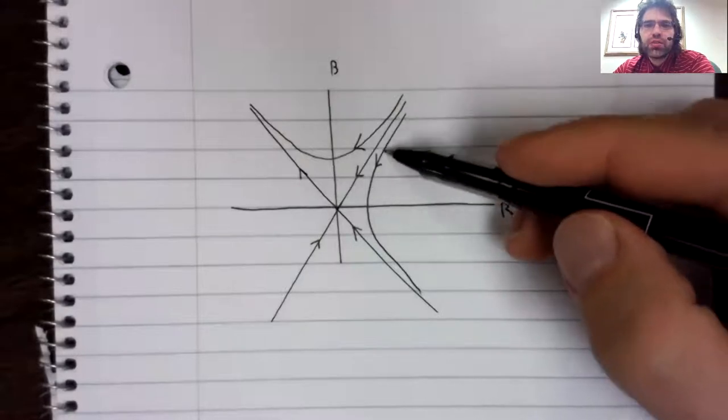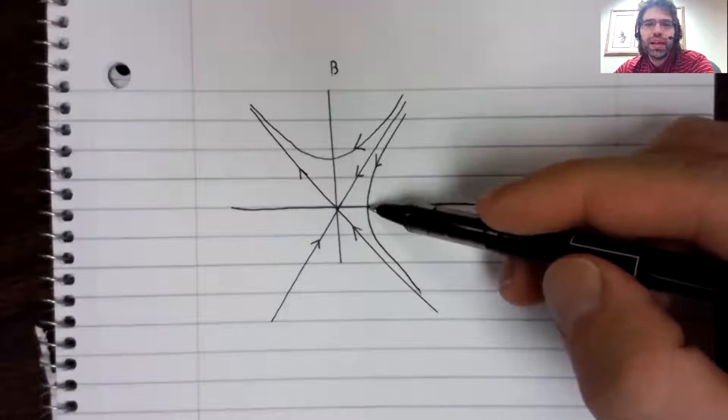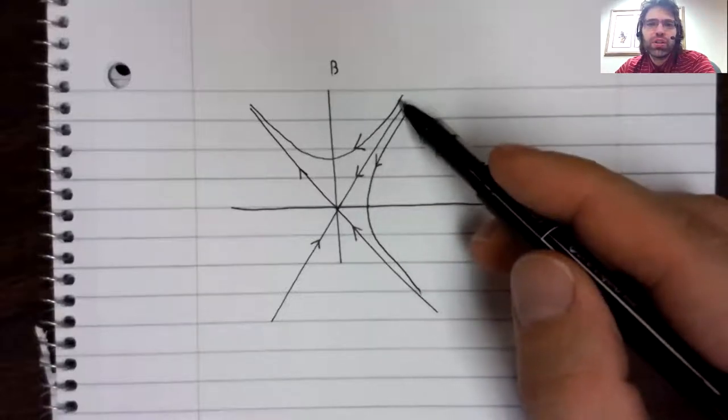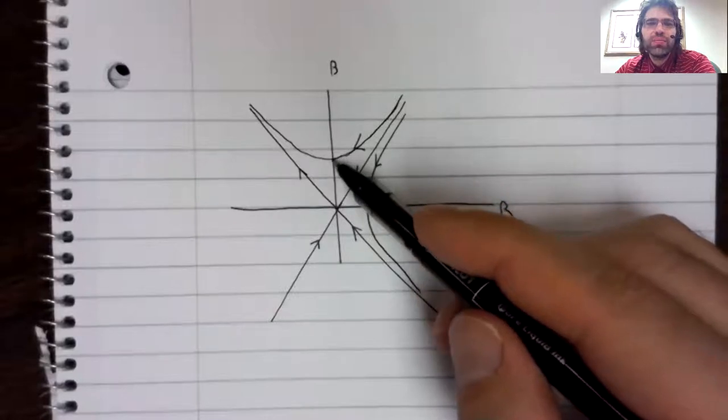And either this trajectory reaches this point, and Blue Army is wiped out. Or this trajectory reaches this point, and Red Army is wiped out.